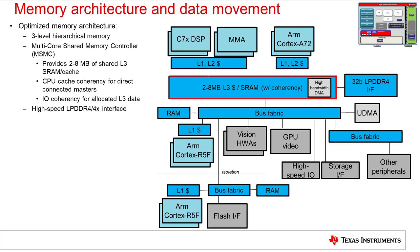This is useful in cases such as deep learning processing for the C71X and MMA. The MSMC also provides access to external DDR memory. The DDR memory bandwidth must be carefully managed to ensure quality of service for real-time tasks. The DDR interface supports LPDDR4 or LPDDR4X protocols at rates up to DDR 3733. The controller also implements inline ECC, such that no additional DDR memory devices are required to be populated in the system.